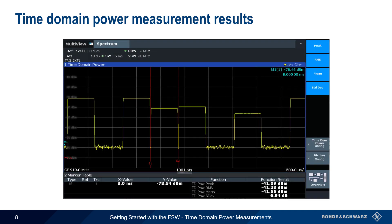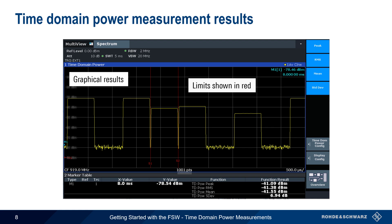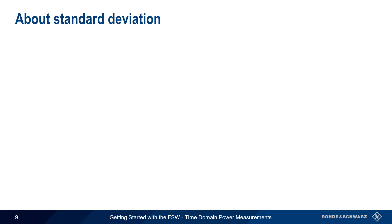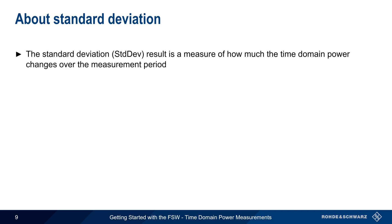Let's look at a typical time domain power measurement result. By default, the top of the screen shows a graphical representation of power versus time, and any configured limits will be shown in red. Numerical results, either for the entire sweep or within user-defined limits, are displayed in a table at the bottom of the screen. As mentioned earlier, measurements can be given in the form of peak power, RMS power, and/or mean power, as well as the standard deviation. Standard deviation in time domain measurement results indicates how much power changes over the defined measurement period, and is calculated relative to the mean value.